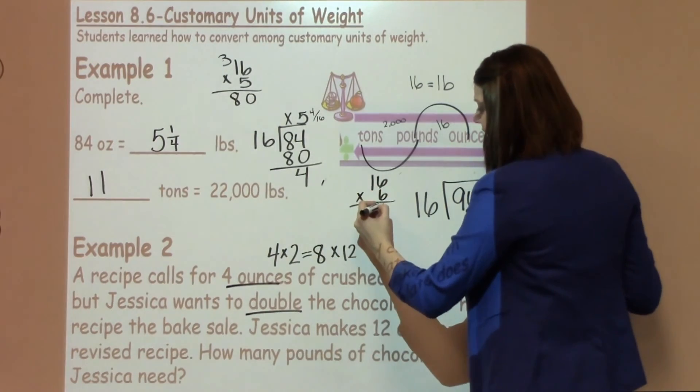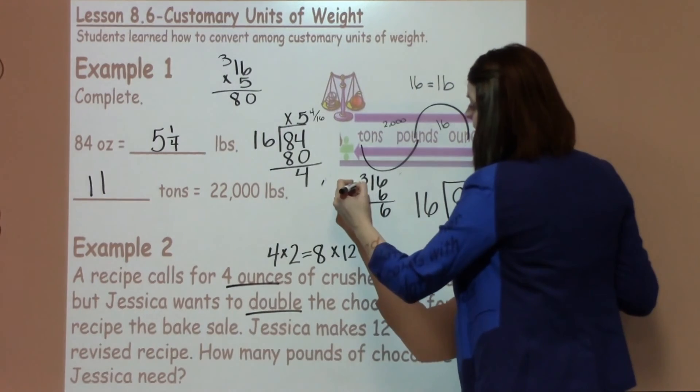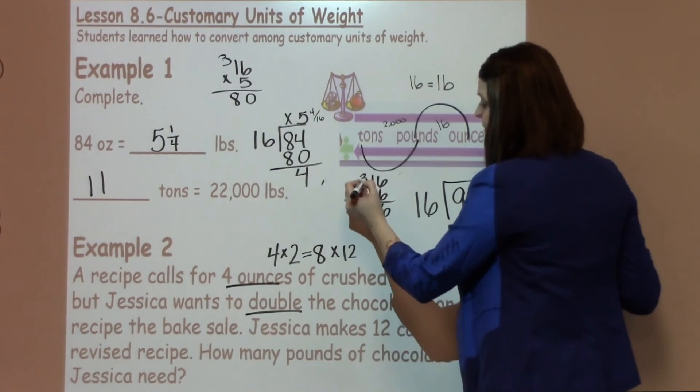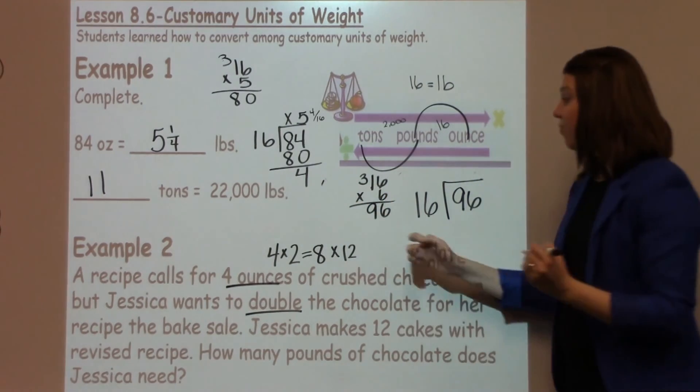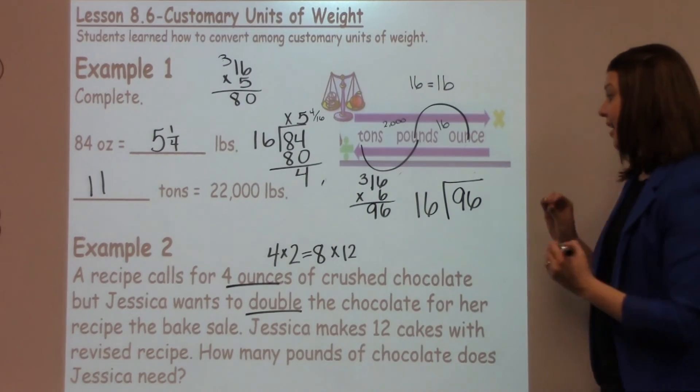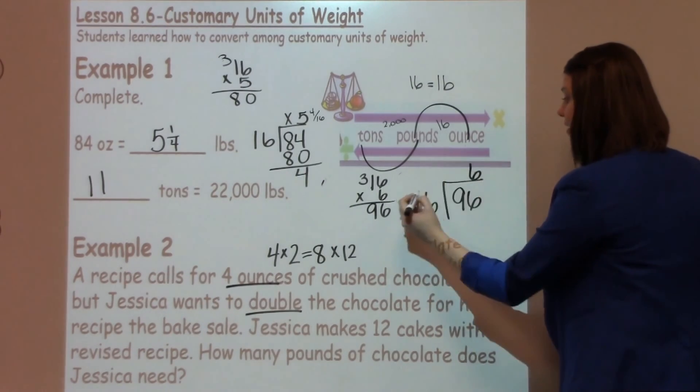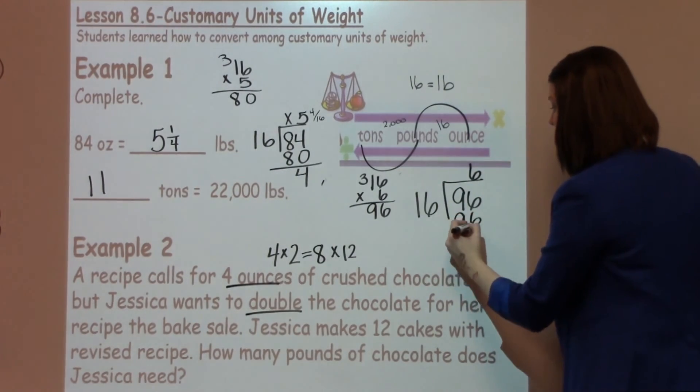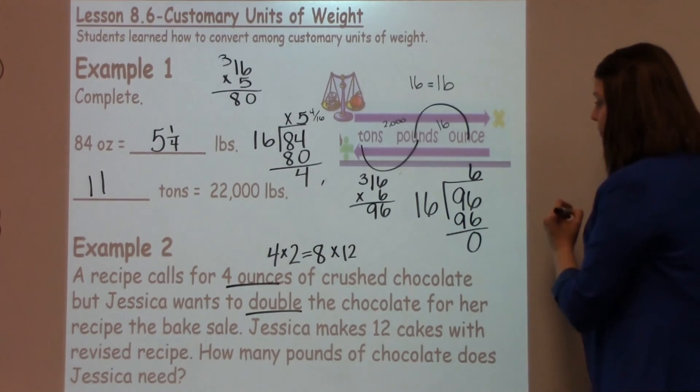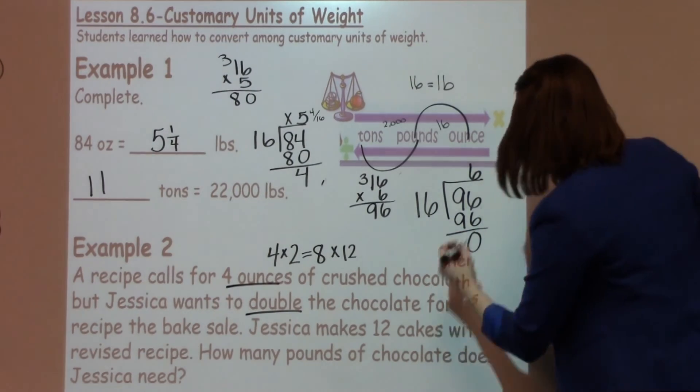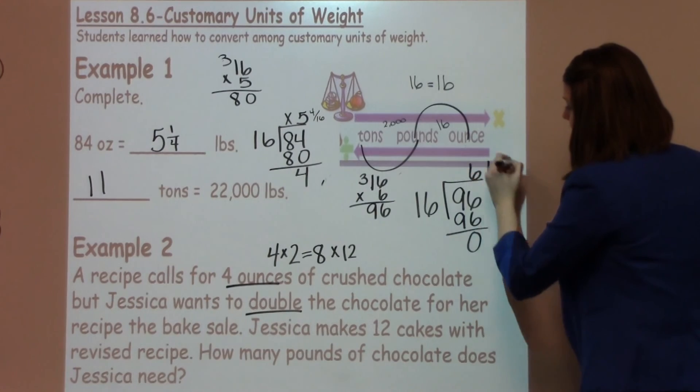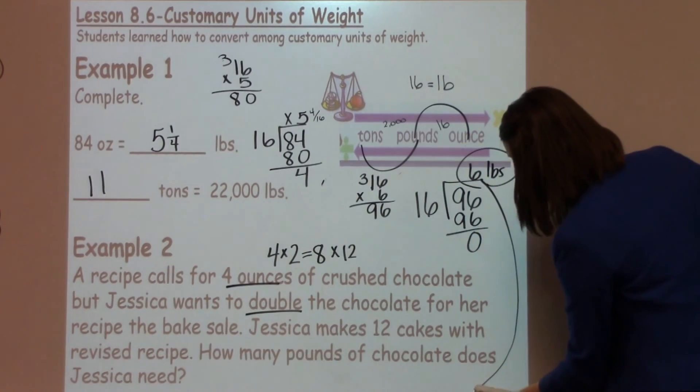6 times 6 is 36. Put down my 6, carry my 3. 1 times 6 is 6 plus 3 more is 9. That's right on the money, which gives me my exact answer. So I'm going to write 6 here. 6 times 16 is 96. So with this problem, I need to buy 6 pounds of chocolate for this recipe.